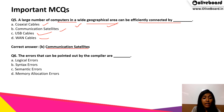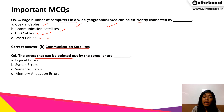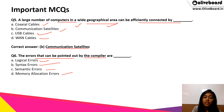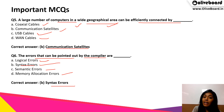The next question: the errors that can be pointed out by the compiler are called? Options are: A, logical errors; B, syntax errors; C, semantic errors; or D, memory allocation errors. The correct answer is B — syntax errors.